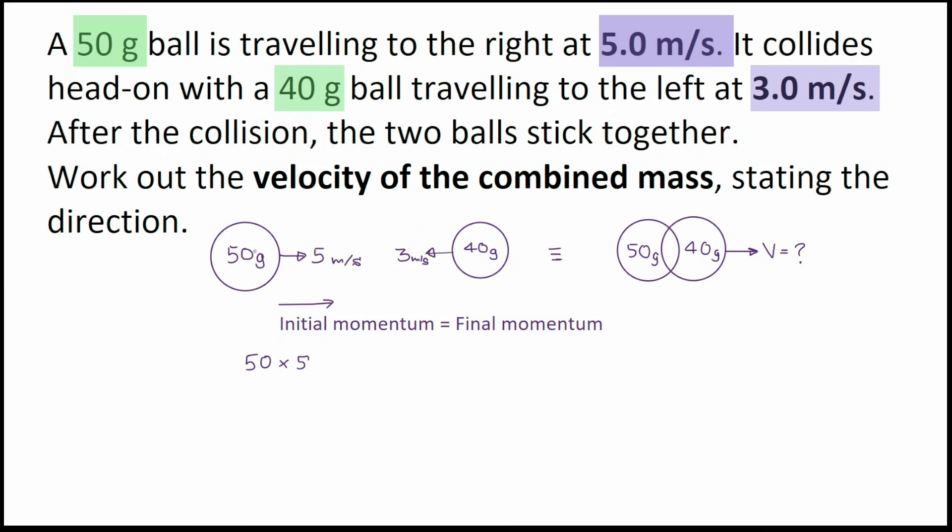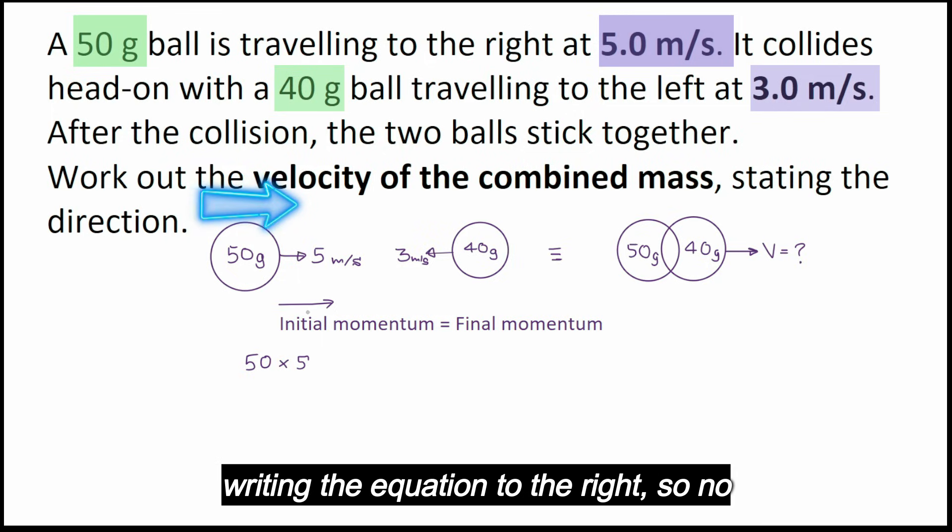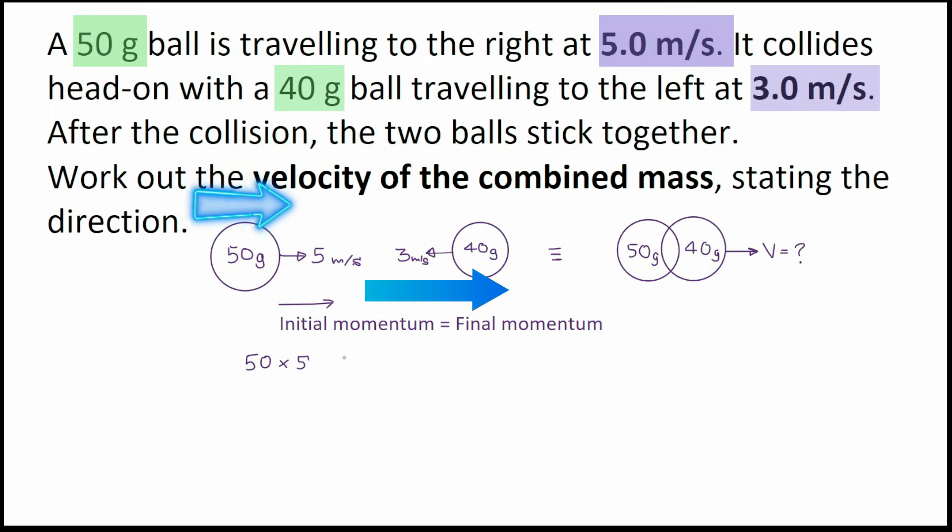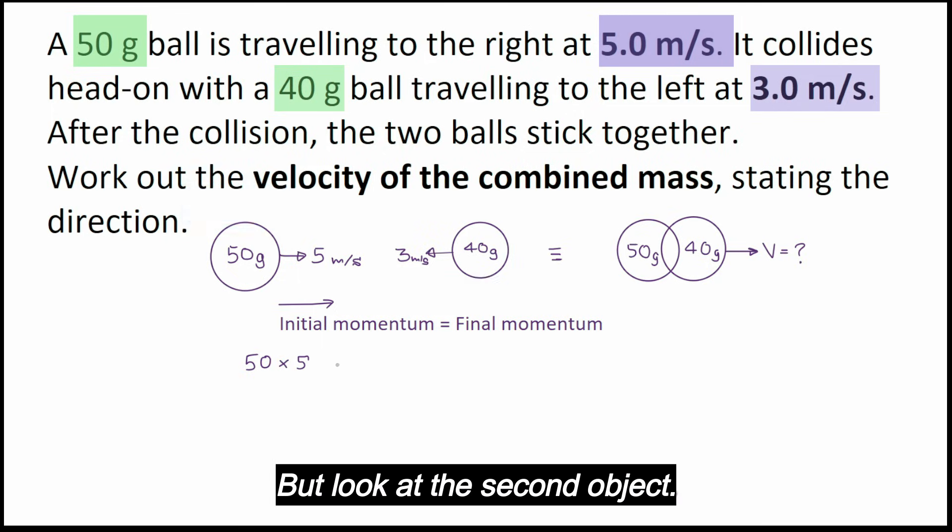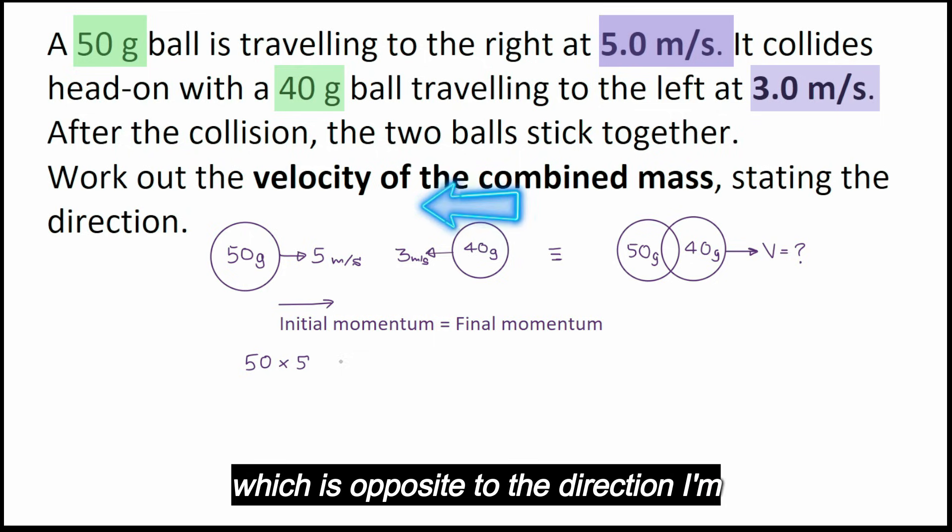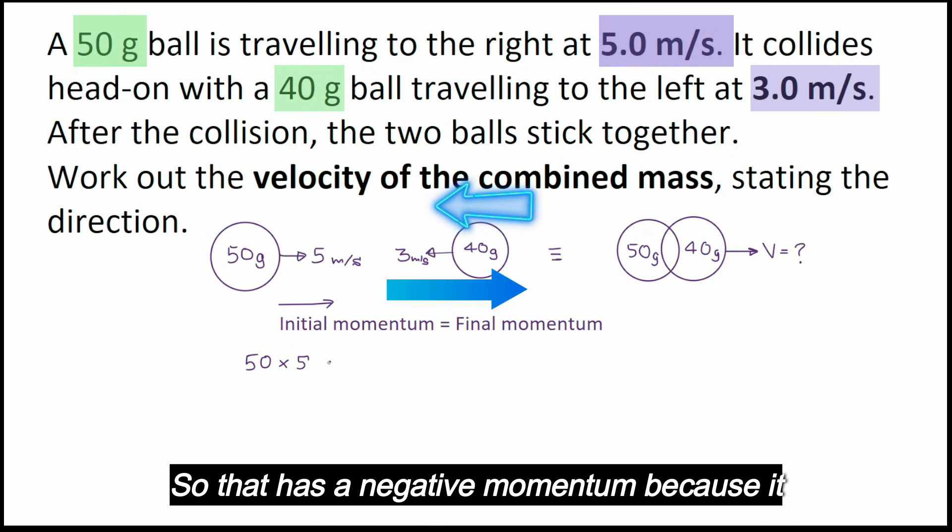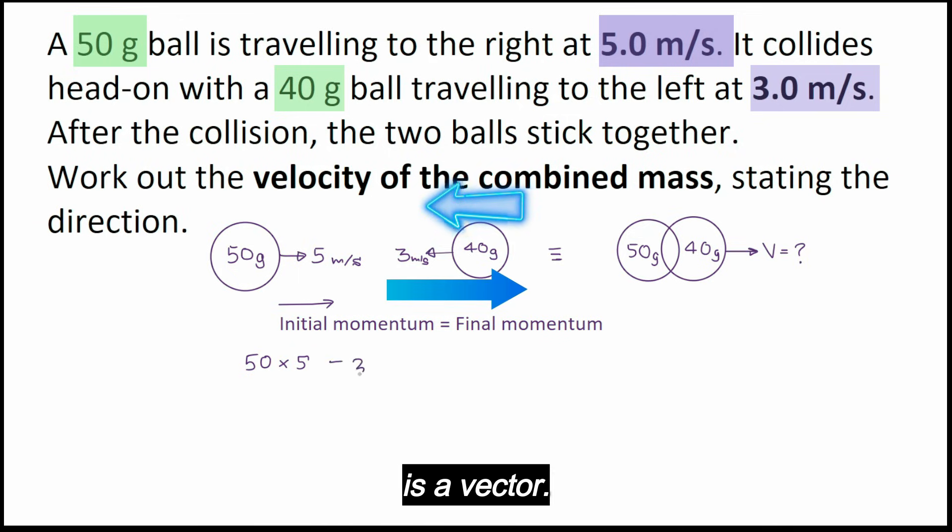So we can leave it as it is. 50 times 5 is the momentum of the first one. Now that one is moving to the right and I'm writing the equation to the right, so no problem. But look at the second object: the 40 gram object is moving to the left, which is opposite to the direction I'm writing it, so that has a negative momentum because it is a vector.